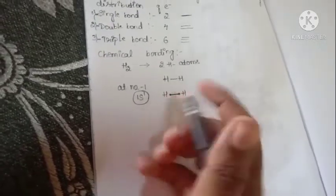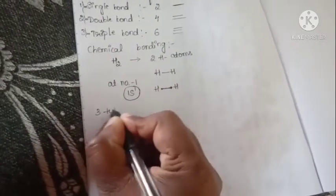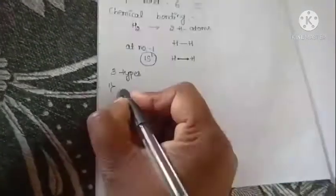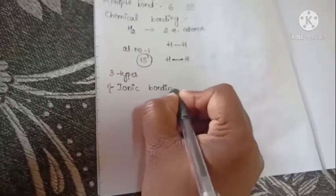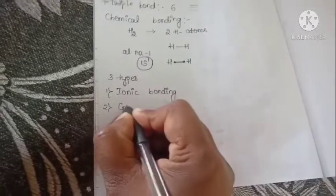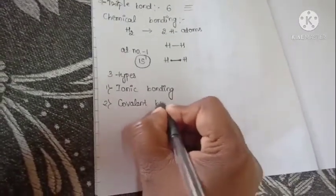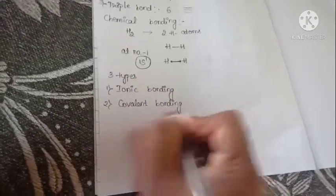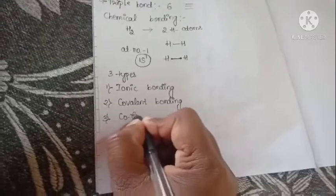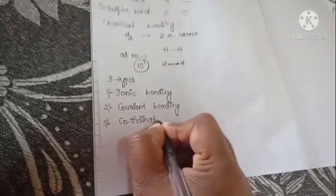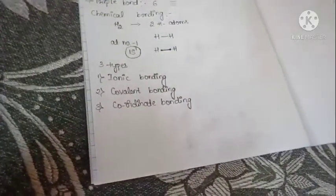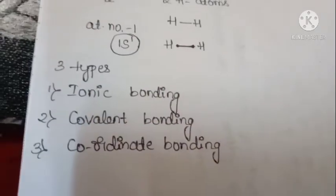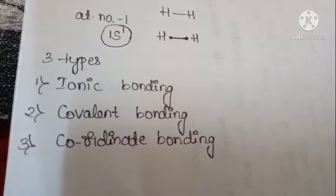In chemical bonding we have three types of bond: first one is ionic bonding, second one is covalent bonding, third one is coordinate bonding. Next we move on to the definitions of ionic bonding, covalent bonding, and coordinate bonding.